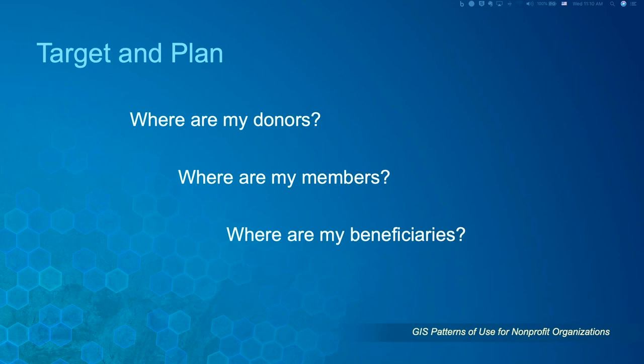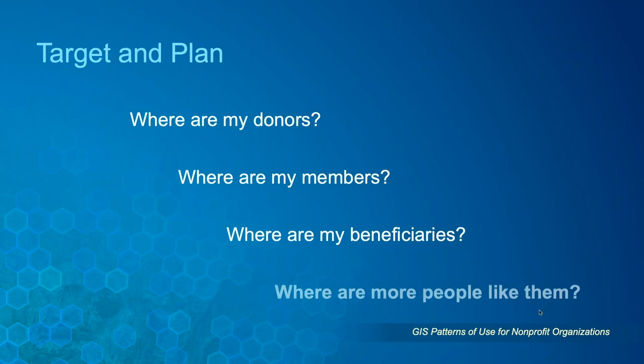Let's dive into target and plan. We start with simple but important questions that most organizations have: Where are the relationships that matter to my organization? Where are my donors? Where are my members? Where are my beneficiaries? Many organizations have this information living in spreadsheets or other databases. When we use GIS to answer these questions, something almost magical happens — we immediately start seeing clusters, gaps, and other patterns. Visualizing and analyzing this data in a map sets us up to ask and answer more questions.